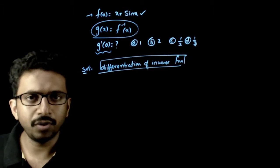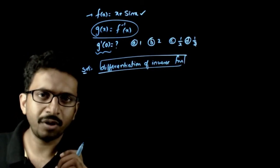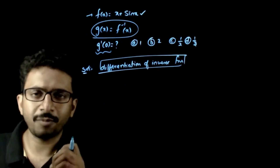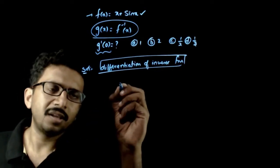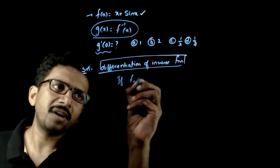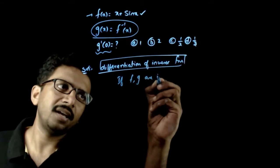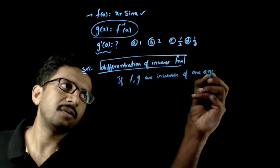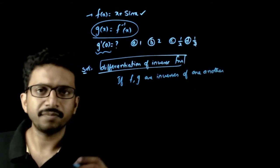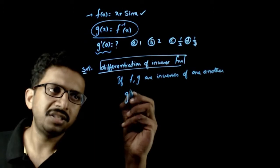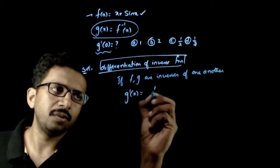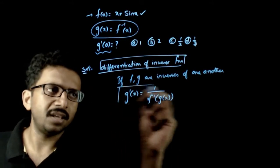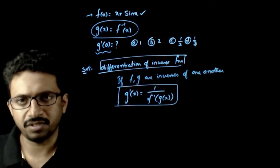You have to go through this topic — it is a very important topic. There is one formula in this topic that you must memorize: if f and g are inverses of one another, then g'(x) = 1 / f'(g(x)). This is the formula for differentiation of inverse functions.